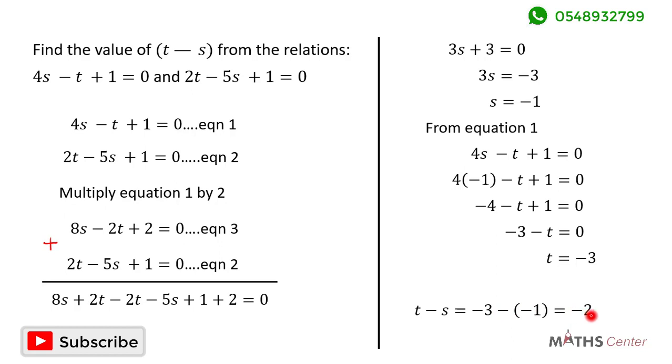This gives us negative 2. So the value of t minus x is negative 2.